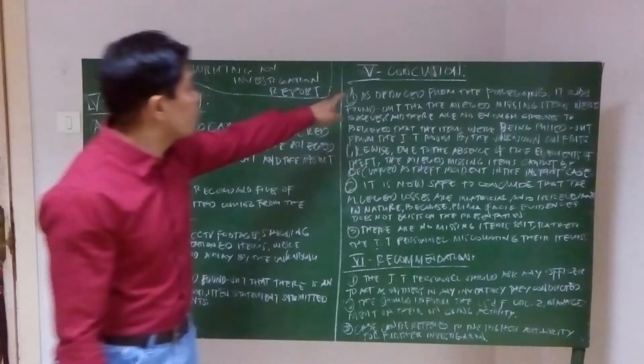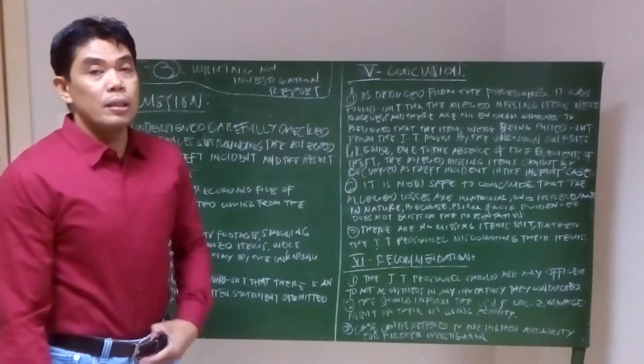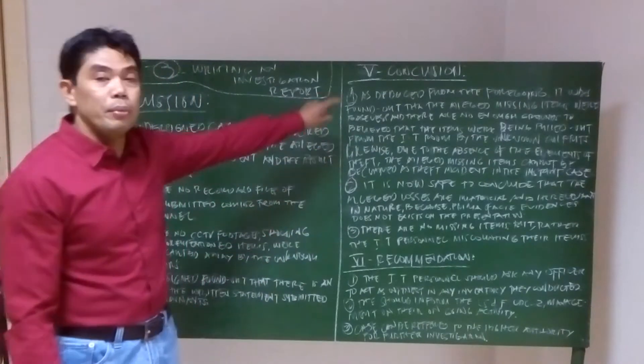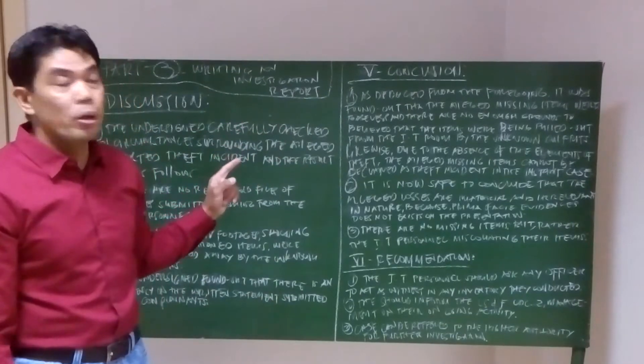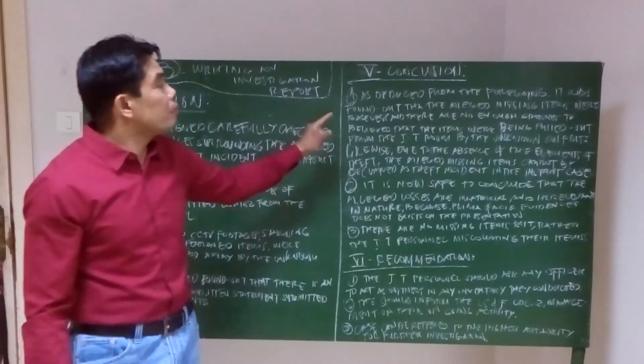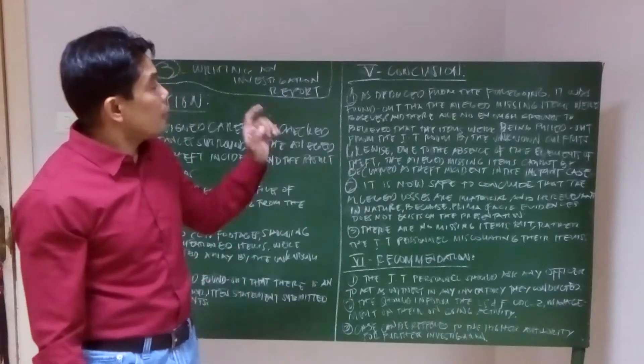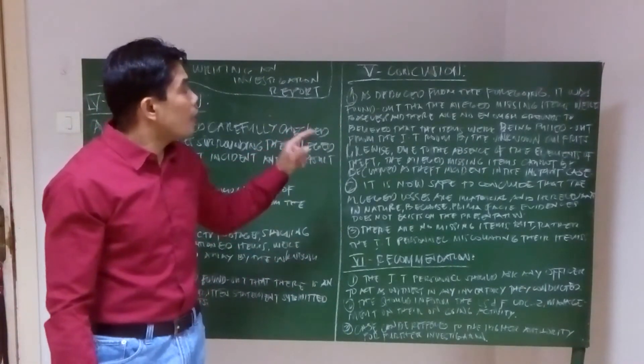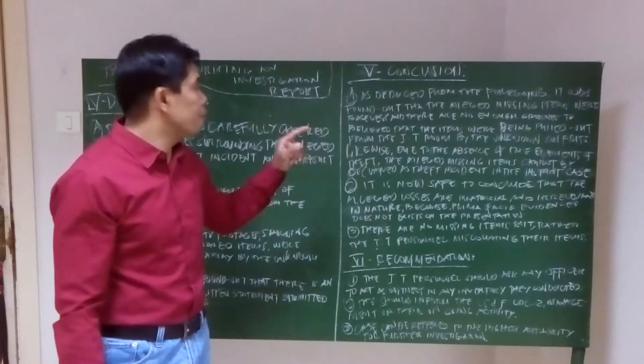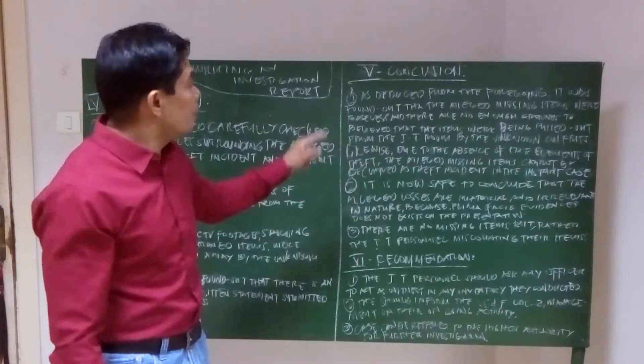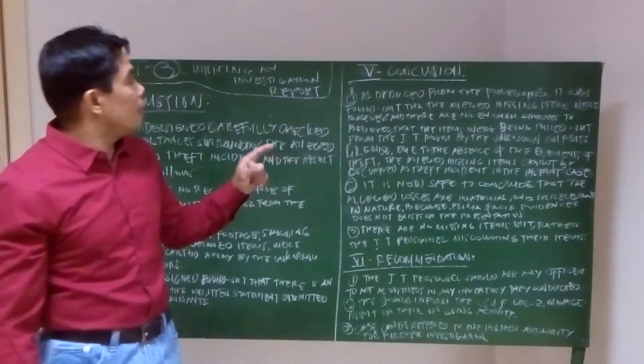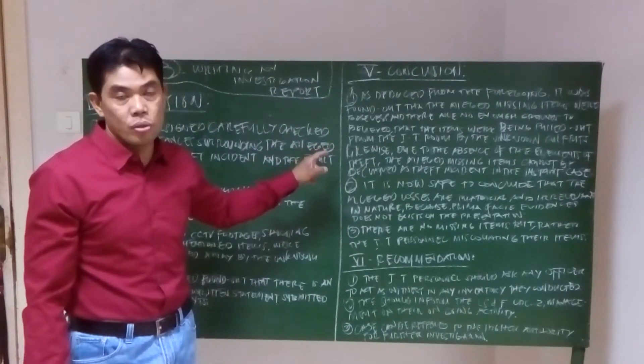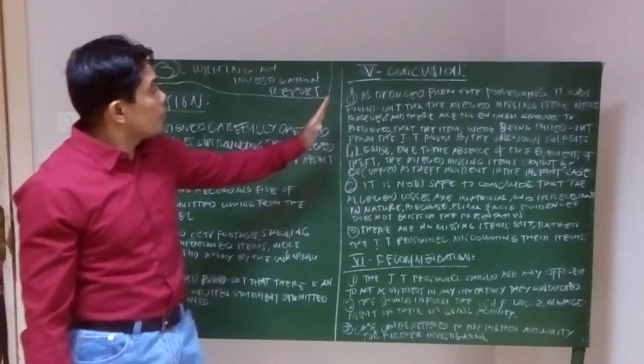Then let's go to the conclusion. If you write your own conclusion, you can begin like this. For example, number one, as deduced from the foregoing, it was found out by the hearing investigator that the alleged missing items were baseless and there are no enough grounds to believe that the items were being pulled out from the item room by unknown culprits. So this is your conclusion.